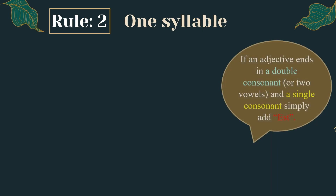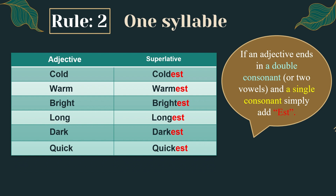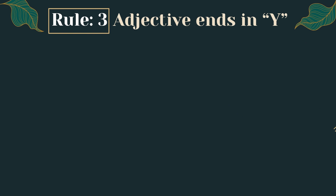Rule number two: one syllable. If an adjective ends in a double consonant, or two vowels and a single consonant, simply add -est. For example, 'cold' changes to 'coldest' — cold ends in a double consonant, so we simply add -est. Further examples: warm → warmest, bright → brightest, long → longest, dark → darkest, quick → quickest.